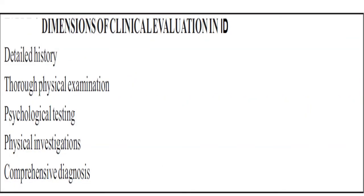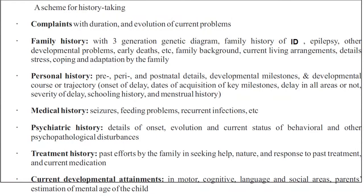Dimensions of clinical evaluation of intellectual disability include detailed history, thorough physical examination, psychological testing, physical investigation, and comprehensive diagnosis. In history taking: chief complaint with duration and evolution, family history with three-generation genetic diagram including family history of intellectual disability, epilepsy, other developmental problems, and early deaths. Family background, living arrangements, stress, coping, and adaptation. Personal history includes pre-, peri-, and postnatal details, developmental milestones and trajectory, dates of acquisition of key milestones, delay in all areas, severity of delay, school history, and menstrual history. Medical history of seizures, feeding problems, recurrent infections. Psychiatric history regarding onset, evolution, and current status. Treatment history of past efforts, response to treatment, and current medication.